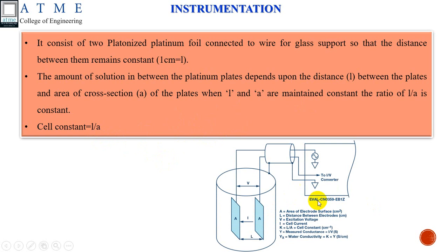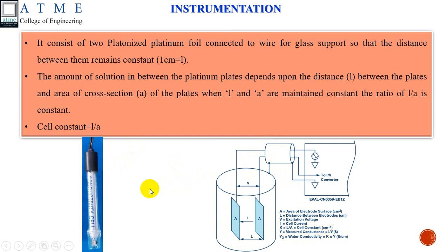This is a typical conductivity setup. A is the area of electrode surface in cm², and L is the length between the two electrodes in centimeters. If they are kept constant, we call it the cell constant, K = L/A. This is a typical conductivity cell.